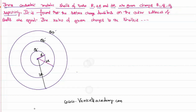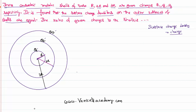It is found that the surface charge densities on the outer surfaces of the shells are equal. We need to remember that surface charge density is defined as charge per unit surface area. We need to find the ratio of the given charges on these three concentric shells.